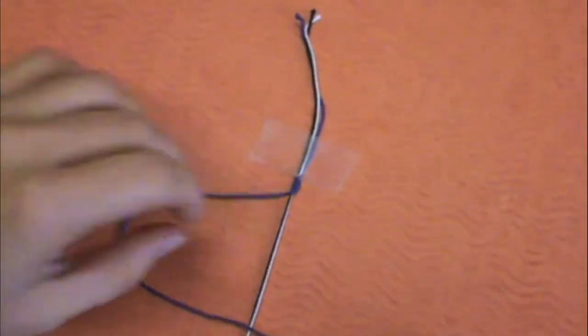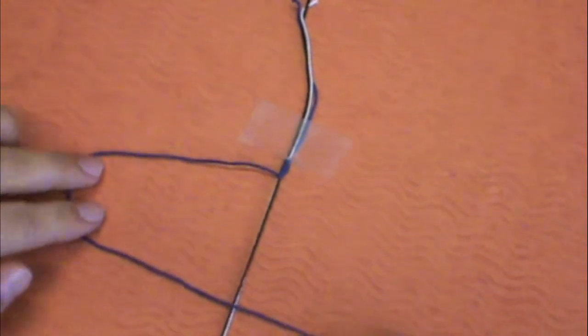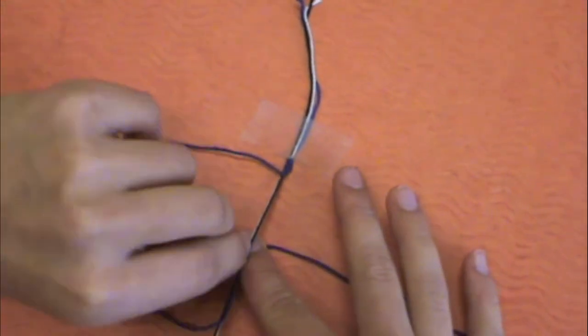After you do this, you're going to just continue making your forward knots. And you'll see that the spiral is beginning to form with the color blue.